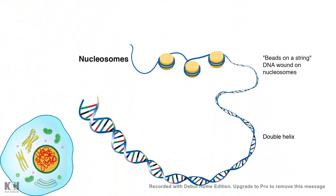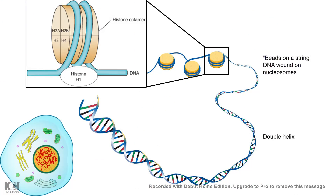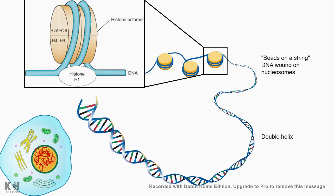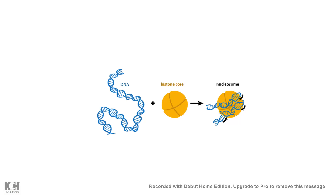But whether in a condensed state or in a transcriptionally relaxed state, the basic structural unit of the chromosome is called the nucleosome, which is formed of DNA and a basic protein known as histone. Histones are basic proteins which are rich in lysine and arginine — all basic amino acids. The basic unit of the nucleosome is a histone core and DNA, so DNA wraps around the histone core to form the nucleosome.